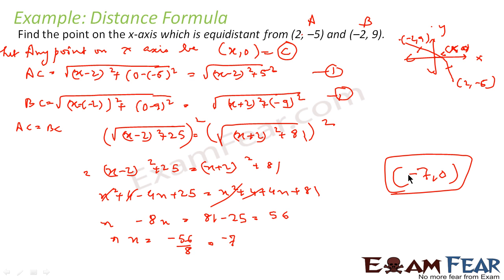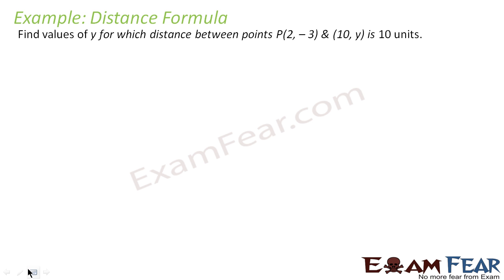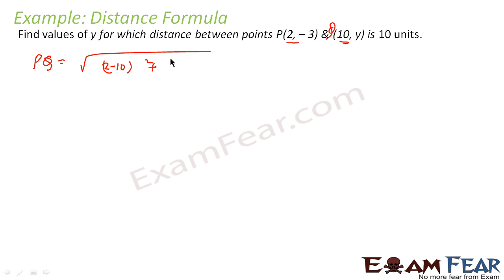This point is equidistant from (2, −5) and (−2, −9). What we did: we took any point on the x-axis as (x, 0), found the distance from that point to each given point, equated the two distances, and got x = −7. Let's take one more example: find the value of y for which the distance between points P and Q is 10 units.